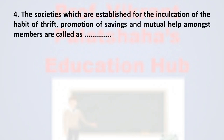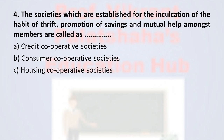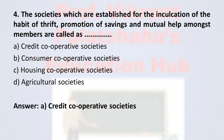Question number 4: The societies which are established for the inculcation of the habit of thrift, promotion of savings and for the mutual help amongst members are called as ___. Option A: credit cooperative societies. Option B: consumer cooperative societies. Option C: housing cooperative societies. Option D: agricultural societies. The correct option is option A, credit cooperative societies. Therefore, the correct option is option A.